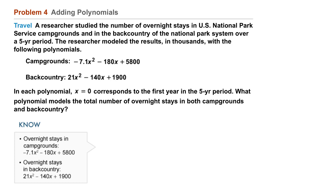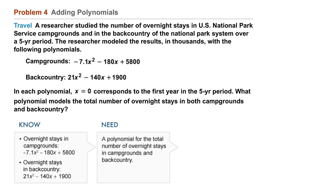You know the overnight stays in campgrounds was equivalent to negative 7.1x squared minus 180x plus 5,800. You also know the overnight stays in the backcountry: 21x squared minus 140x plus 1,900. You need a polynomial for the total number of overnight stays in campgrounds and backcountry.